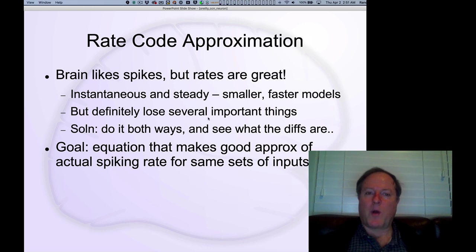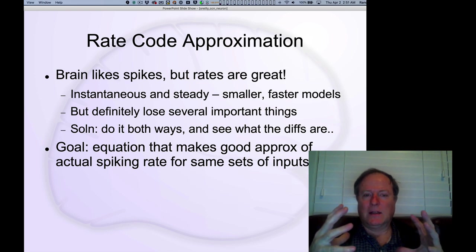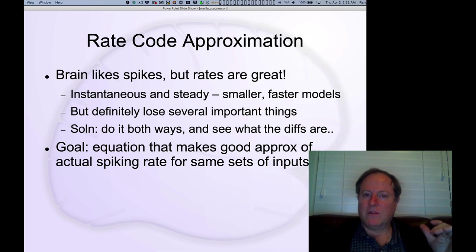But it turns out in our models it's convenient to actually use an approximation to that called the rate code approximation. Rates have a lot of advantages from a simplicity and computational perspective. They're instantaneous, you can kind of read out directly a real numbered value and send that to other neurons, and it kind of immediately reflects something that otherwise would have to be integrated and computed over time.